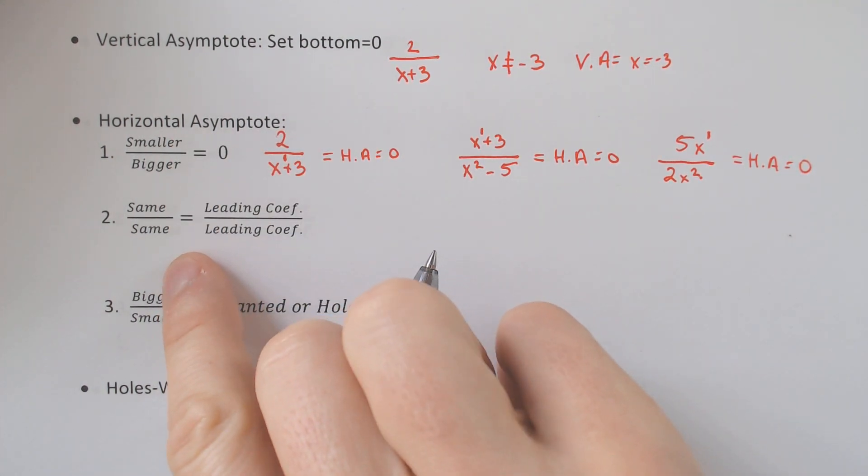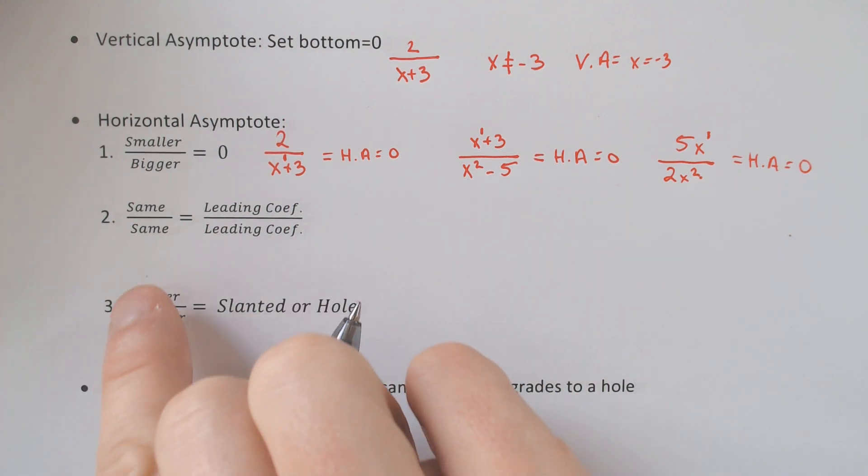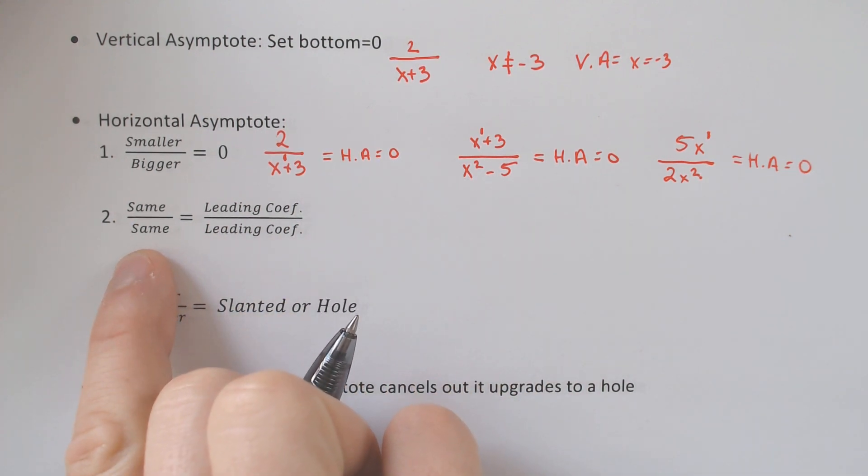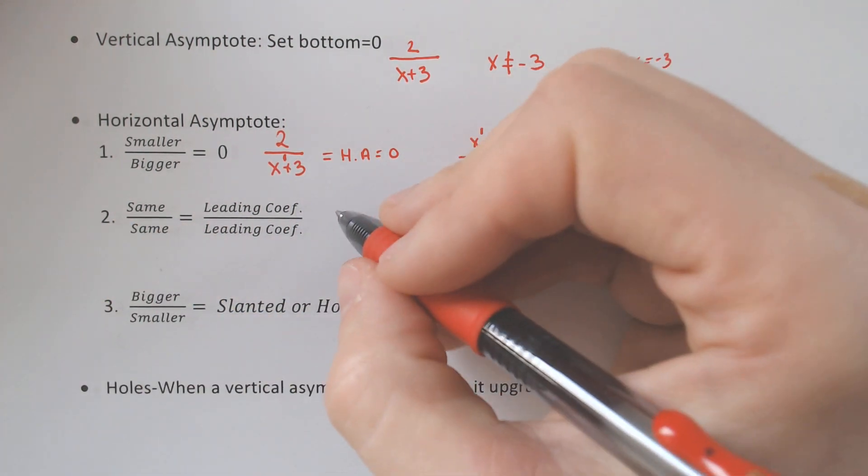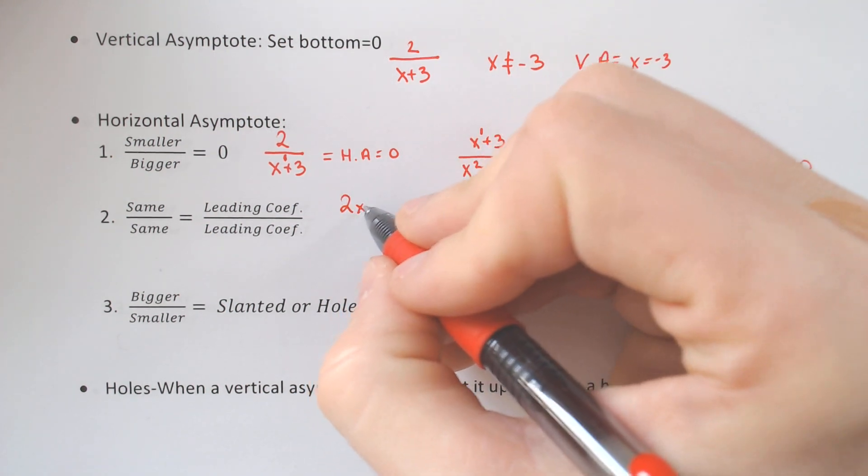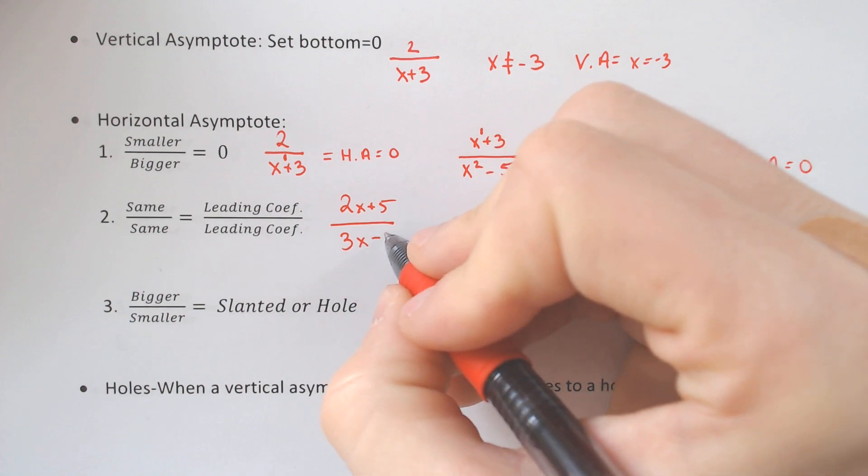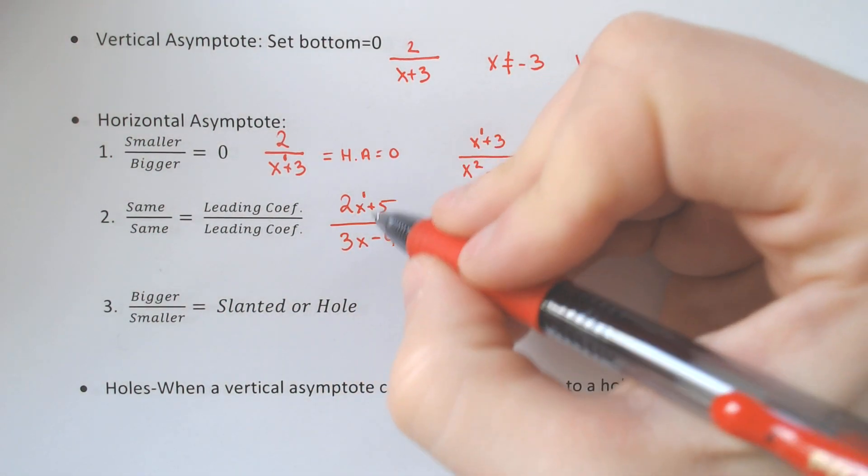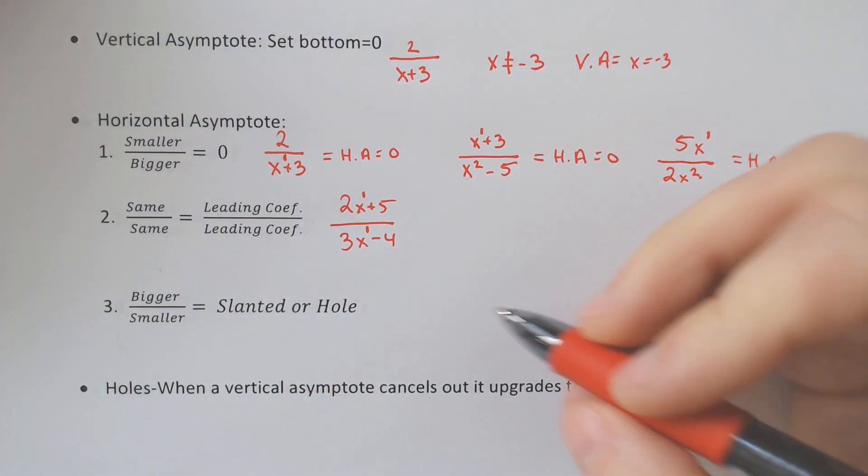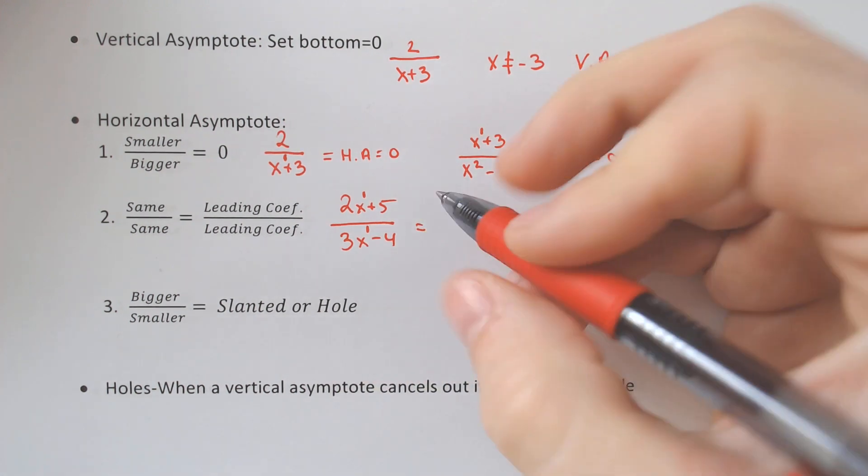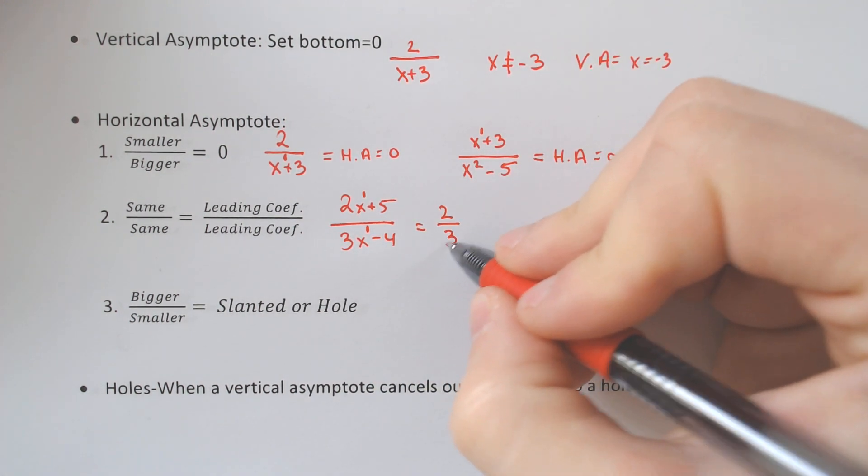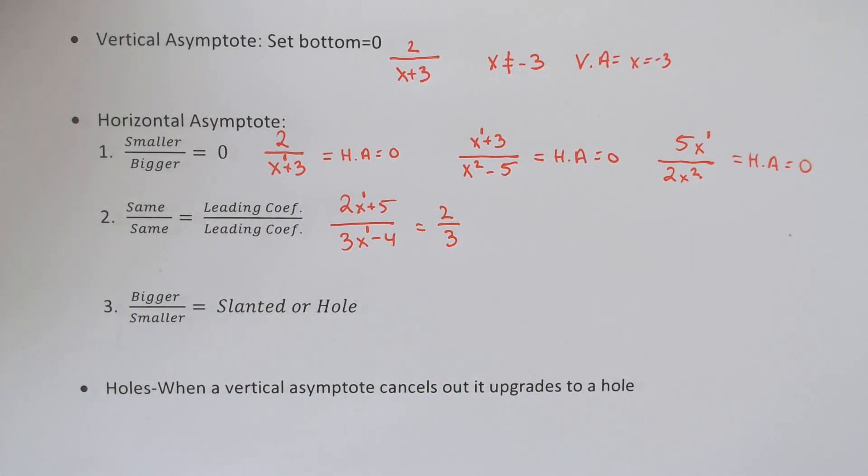There's another scenario where you could have the same exponent over the same exponent, and if that happens, so for instance, if you had 2x plus 5 over 3x minus 4, x to the 1st and x to the 1st, your horizontal asymptote in this case would be 2 thirds, which is kind of funky, but that would be what it is.